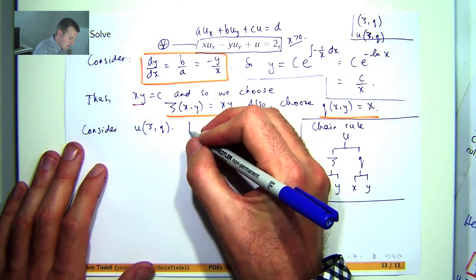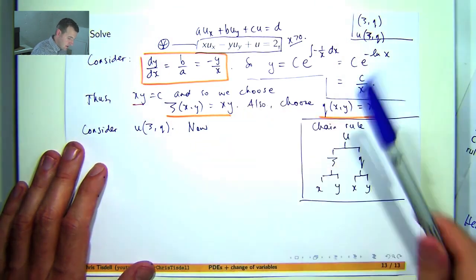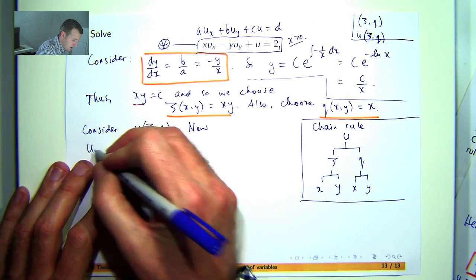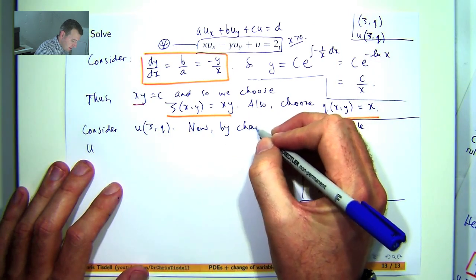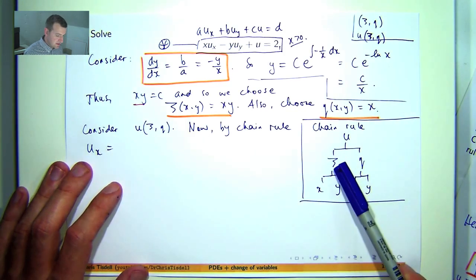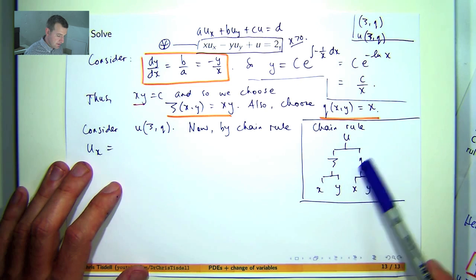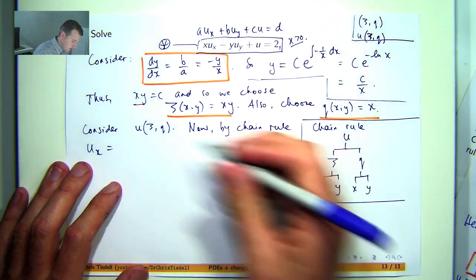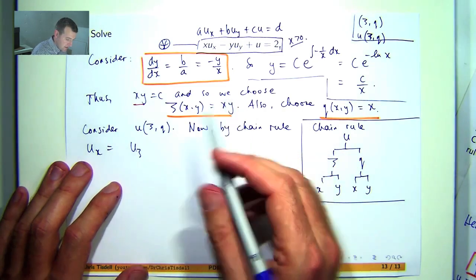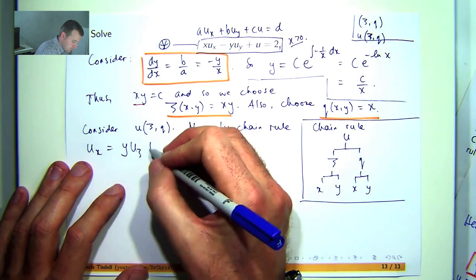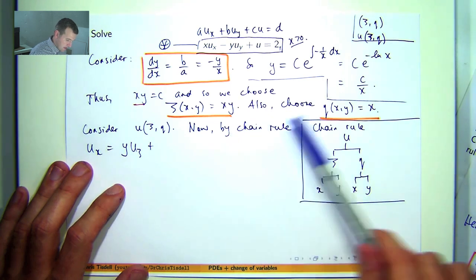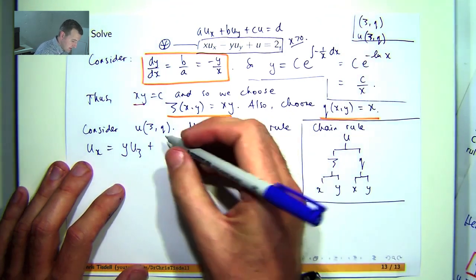So to calculate u sub x, you work out all the paths leading to an x. When you go from letter to letter you form a derivative. u sub psi times psi sub x plus u sub eta times eta sub x. So u sub psi, we don't know what that is, but psi sub x, differentiate this partially with respect to x. I'll get y plus u sub eta times eta sub x. So eta sub x differentiate this with respect to x, I'll get 1.